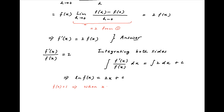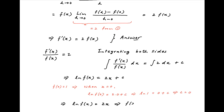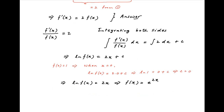Using the condition f(0) = 1 and putting x = 0, the equation becomes ln(f(0)) = 2(0) + c, which gives ln(1) = c, so c = 0. Substituting back, we get ln(f(x)) = 2x, which implies f(x) = e^(2x). This is the required answer.